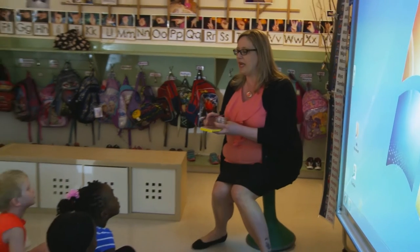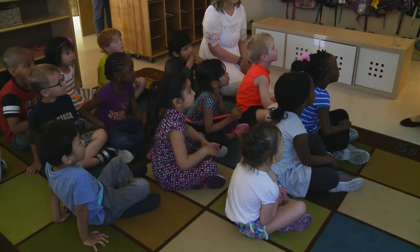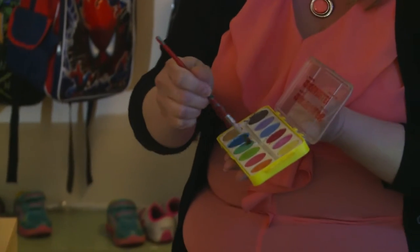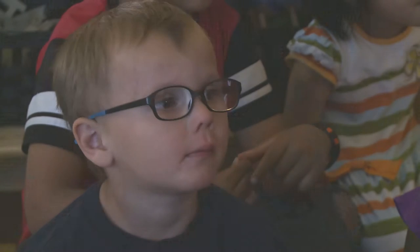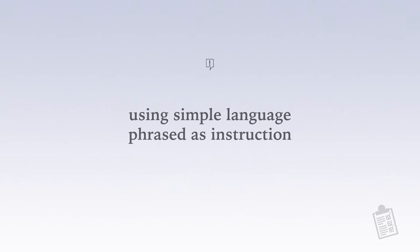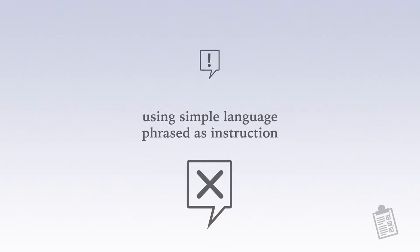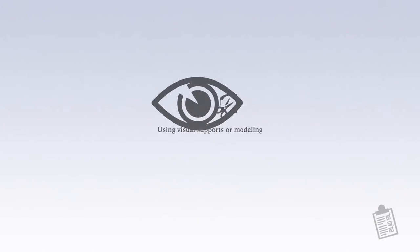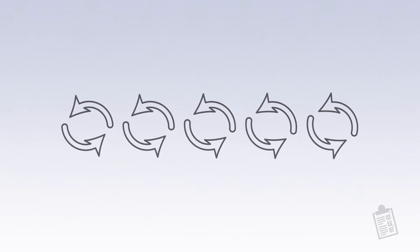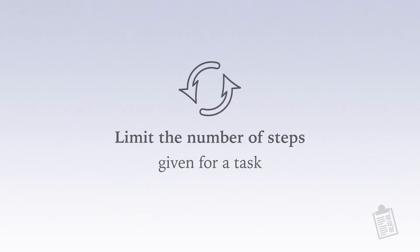When painting with this kind of paint — these are called watercolors. Communicating a behavior expectation concretely ensures students understand the expectation. This includes stating what the student is expected to do versus what the student shouldn't do, using concrete simple language phrased as an instruction — not a question — using visual supports or modeling to enhance comprehension.